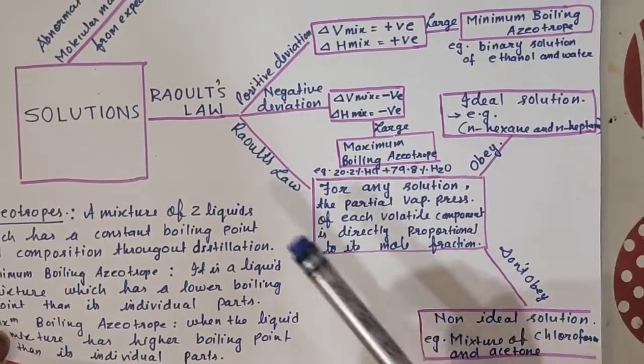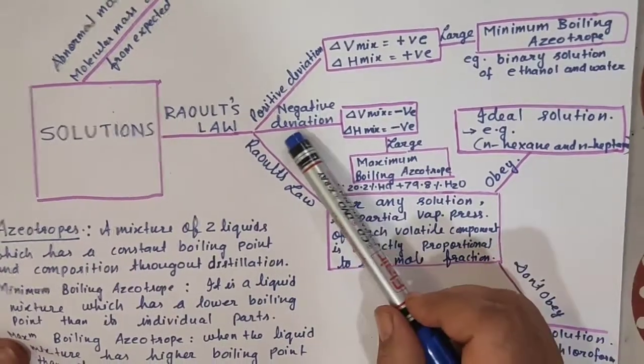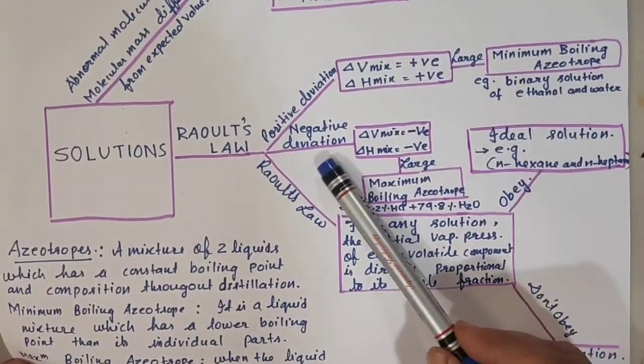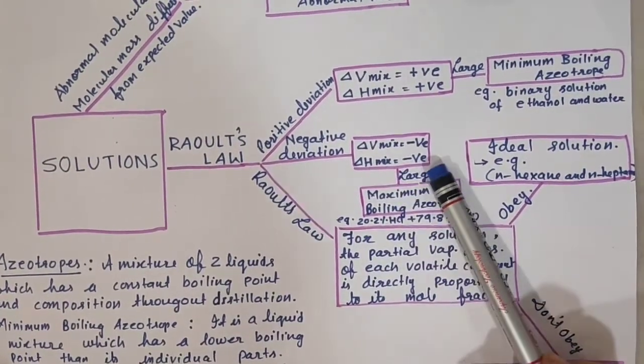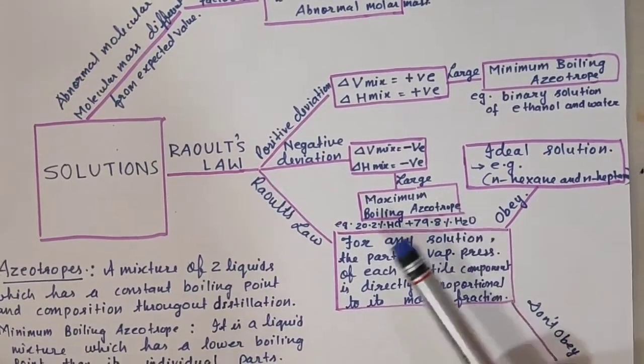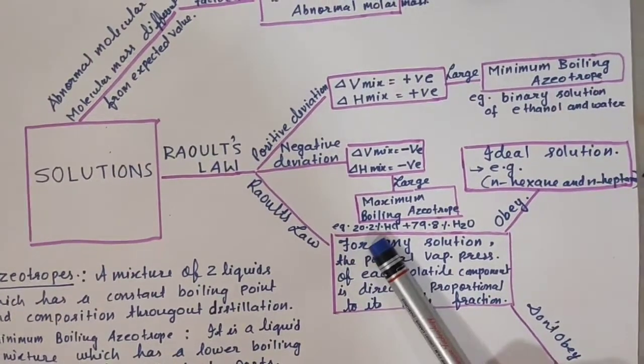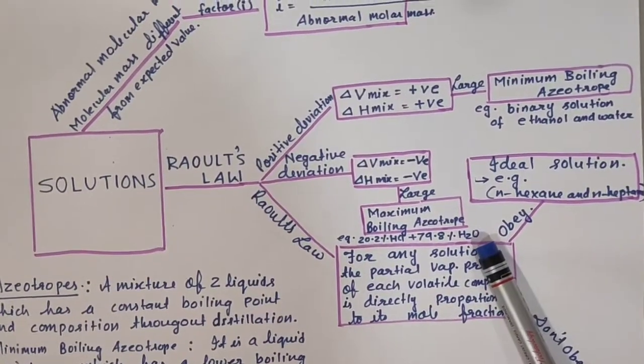And those who do not obey Raoult's law, they are non-ideal solution. Example of non-ideal solution are mixture of chloroform and acetone. Now we have come to maximum boiling azeotrope. When will it occur? When there is negative deviation.